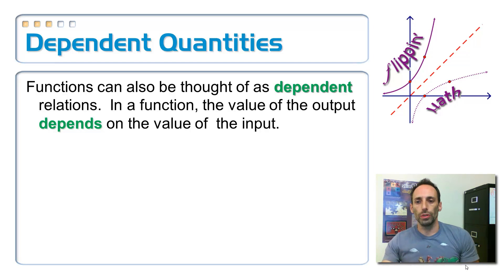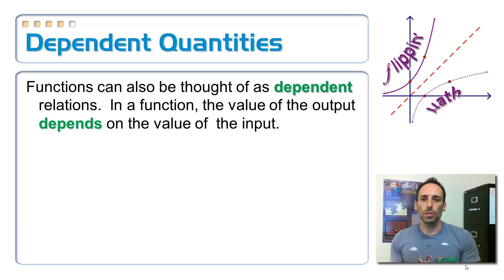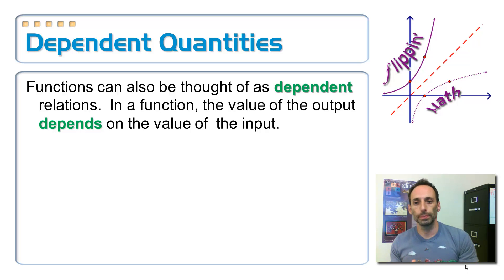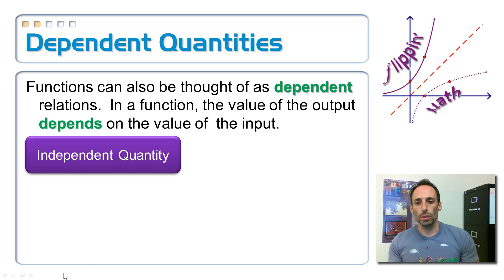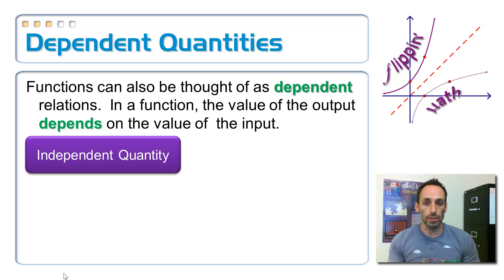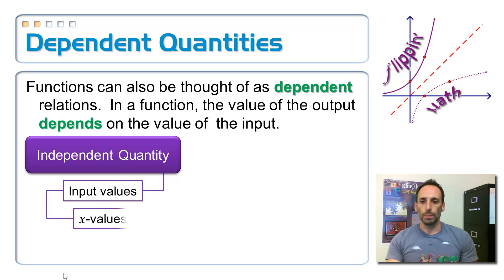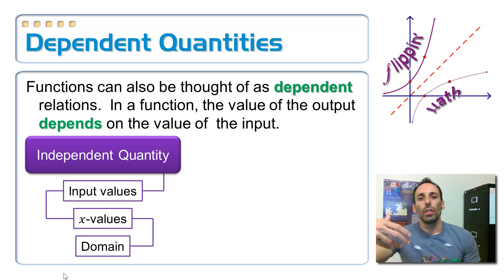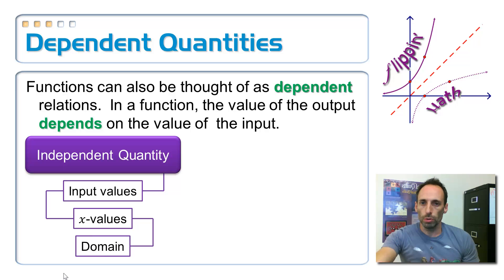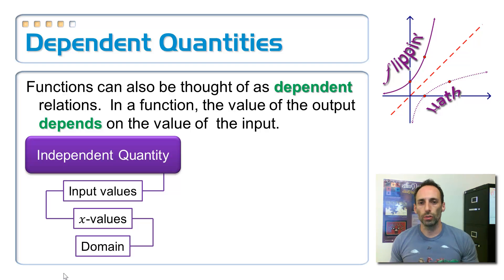Let's talk about the actual names of the different kinds of variables. Functions can be thought of as dependent relations — what comes out depends on what you stick in. The first is the independent quantity. You probably talk about independent variables in science class. Your independent quantity is what you get to stick in — that's your x value, your input value. Relate all those terms together: independent quantity, independent variable, inputs, x values, and domain all go together.